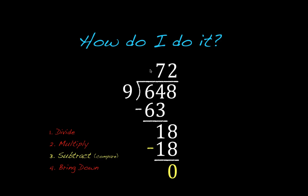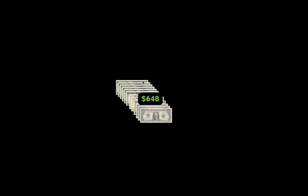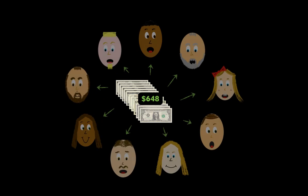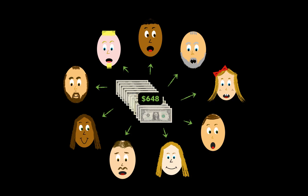So let's go back and compare this to the example we started with. So we had $648, and we asked the question, if we were to divide that up into 9 equal groups, how much money would each person receive? Well, the answer to that is $72. And that's it.